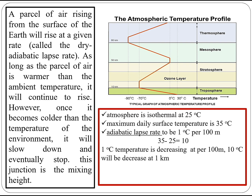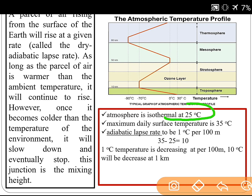The data given in this question is that the atmosphere is isothermal at 25 degree Celsius, meaning temperature will remain constant at 25 degree Celsius, and the maximum daily surface temperature is 35 degree Celsius. So the temperature difference is 10 degree Celsius. The adiabatic lapse rate is given as 1 degree Celsius per 100 meter, meaning 1 degree Celsius temperature will be decreased after every 100 meter.